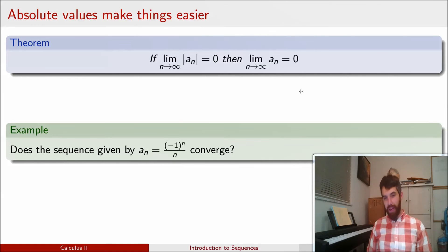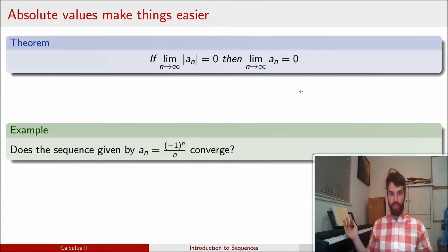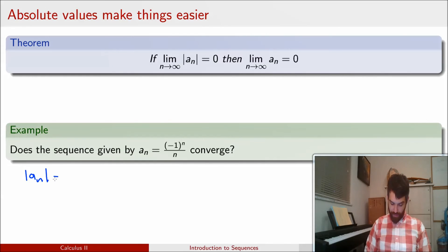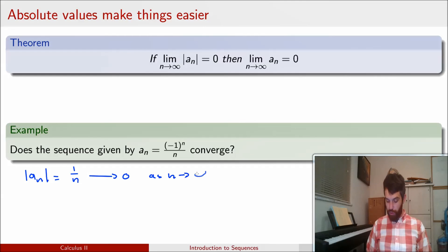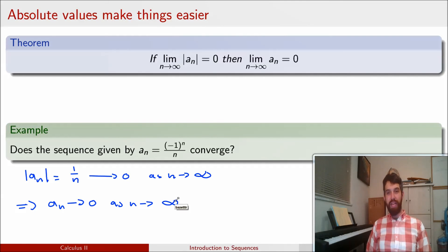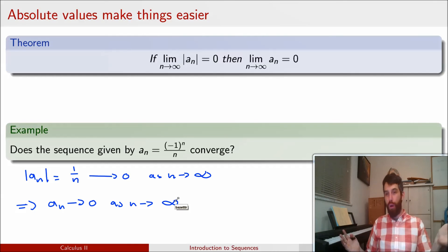For instance, consider the sequence a_n = (-1)^n / n. The (-1)^n doesn't translate cleanly into a function of x, but the absolute value of a_n is just 1/n, and that goes to 0 as n goes to infinity — just as 1/x goes to 0. By the theorem, that implies a_n also goes to 0. This is really nice for handling sequences with (-1) to some power: put absolute values around them and the sign issues disappear, at least if the limit goes to 0.